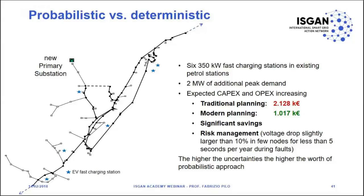But if we add fast charging stations for electric vehicles — because this is a very beautiful area where we want to reduce pollution and increase the number of electric vehicles — then there is a very important difference between traditional and modern planning. The savings are very significant: we can manage the risk without spending a lot of money on network upgrades. The message is that the higher the uncertainty, the higher the value of the probabilistic approach.